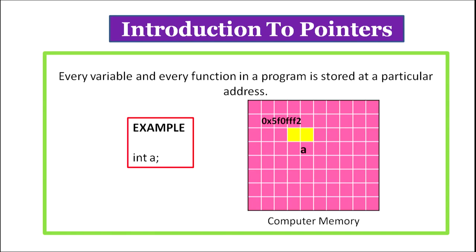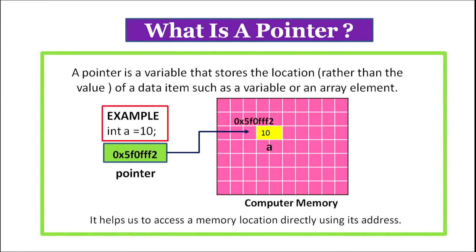Every variable in every function in a program is stored at a particular address. A pointer is used to refer to a variable indirectly, that is by its address and not by its name. A pointer is a variable that stores the location rather than the value of a data item, which can be a variable or an array element. Pointer is a variable which contains the address of the memory allocated to another variable, helping to access a memory location directly using its address.